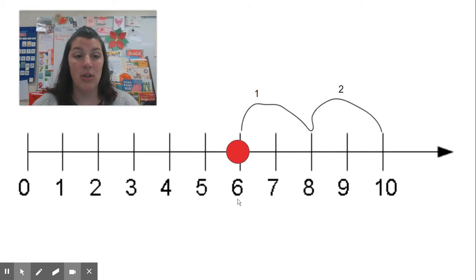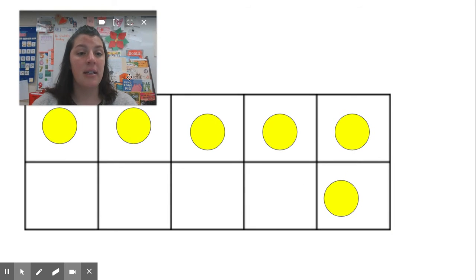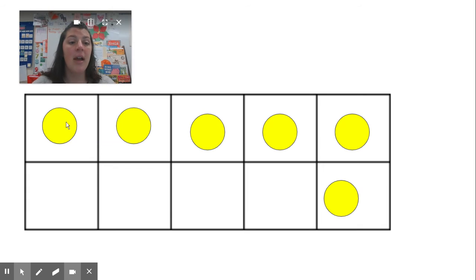Remember, we started at the number six, and we were trying to figure out how many more we needed to make ten. So some friends used a ten frame, and they said you would put six on the ten frame, and then we could count the empty boxes. So let's see how many empty boxes there are. Can you count with me? One, two, three, four.